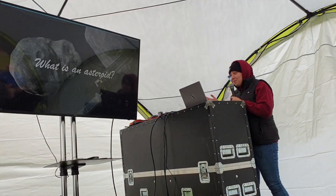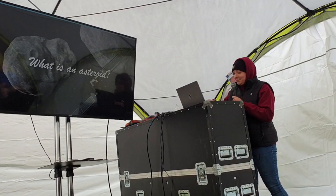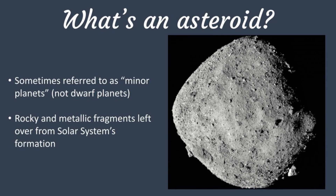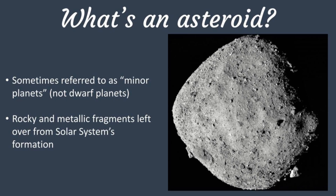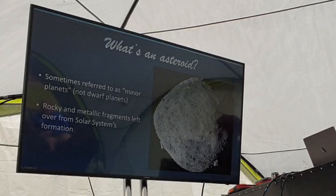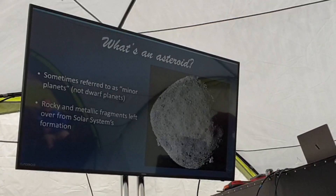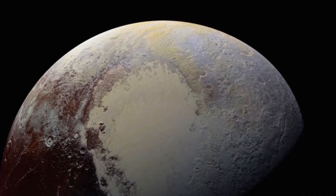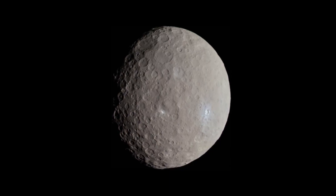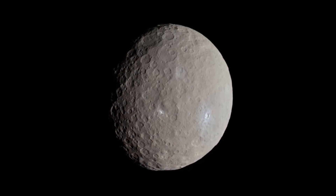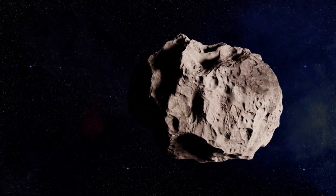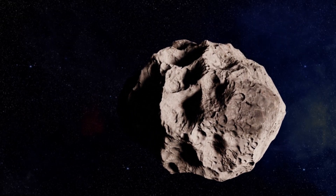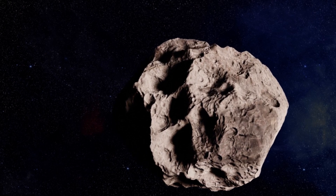What is an asteroid? They're sometimes referred to as minor planets, and this is a very important distinction to dwarf planets. Dwarf planets are things like Pluto, Ceres, things like that. And then minor planets are the kind of lumpy, misshapen, sometimes almost spherical potatoes that are asteroids.